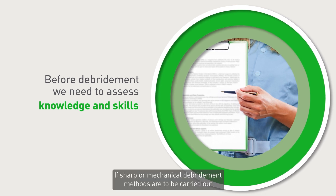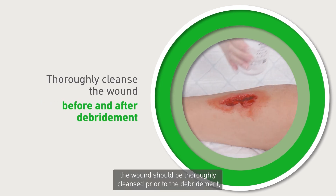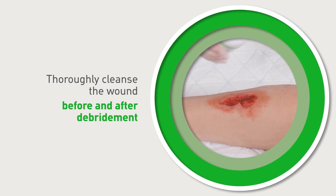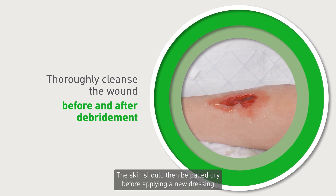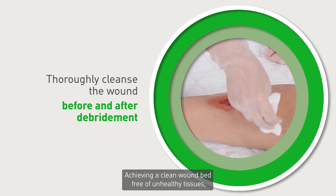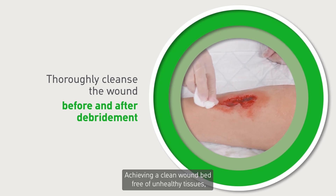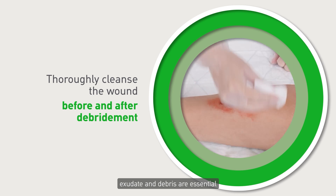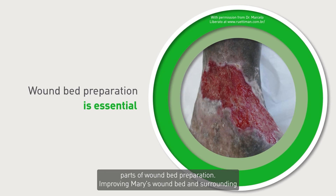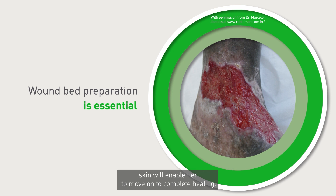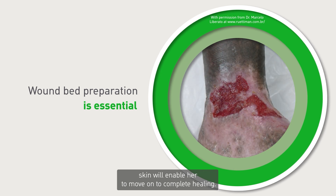If sharp or mechanical debridement methods are to be carried out, the wound should be thoroughly cleansed prior to the debridement as well as after, in order to remove any debris that was dislodged. The skin should then be patted dry before applying a new dressing. Achieving a clean wound bed free of unhealthy tissues, exudate and debris are essential parts of wound bed preparation. Improving Mary's wound bed and surrounding skin will enable her to move on to complete healing.